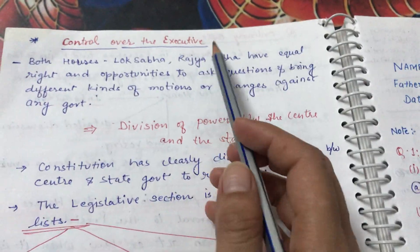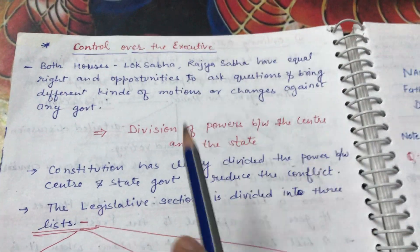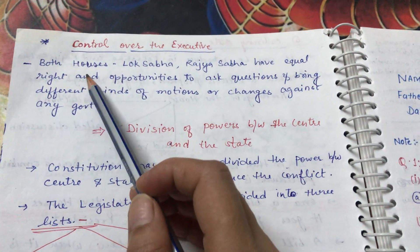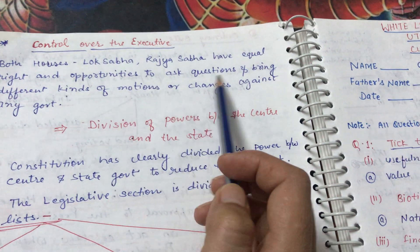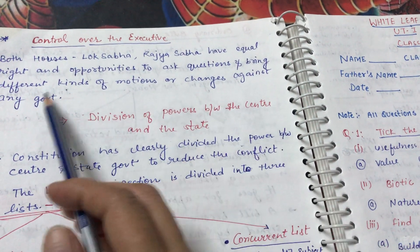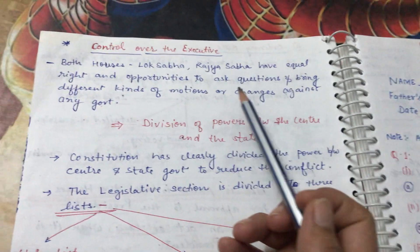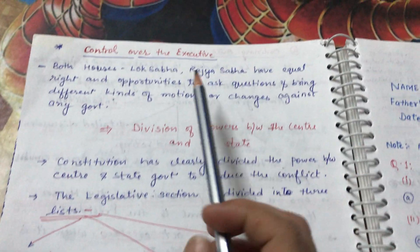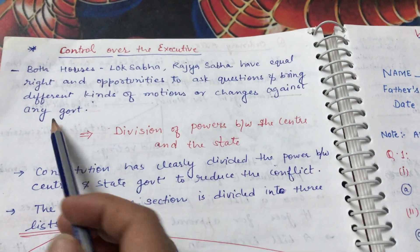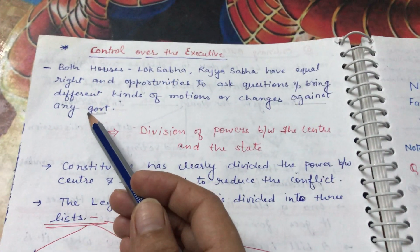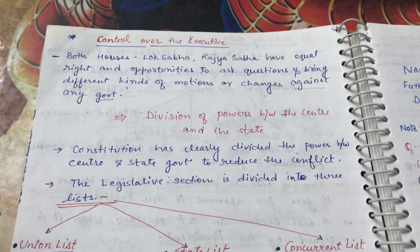Regarding control over the executive: both Lok Sabha and Rajya Sabha have equal rights to ask questions and bring different kinds of motions or changes against the government. If they do not like any work of the government, they can bring a motion regarding that particular matter.